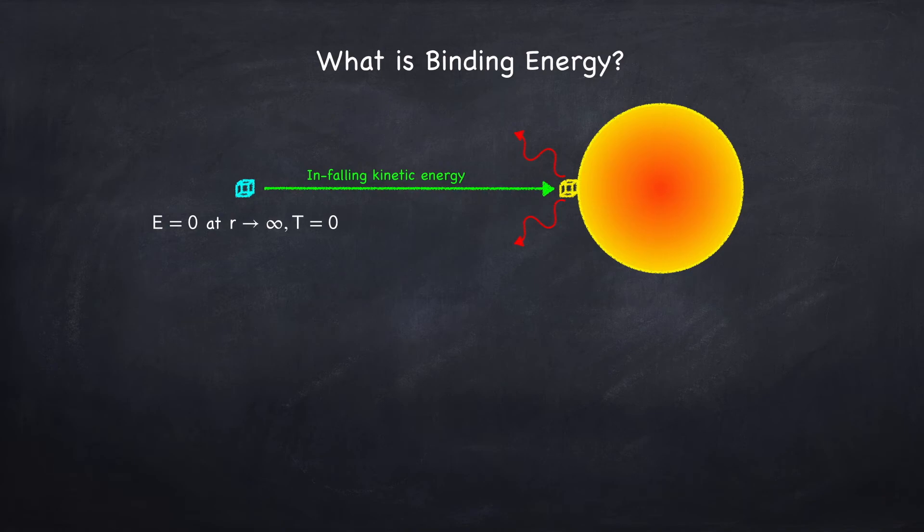So now the total energy will be the internal energy plus the gravitational potential energy. The gravitational potential energy will be equal to the negative of the infalling kinetic energy right before it comes to a stop. The internal energy is the fraction of that kinetic energy that's converted into heat so that now the temperature is no longer zero.